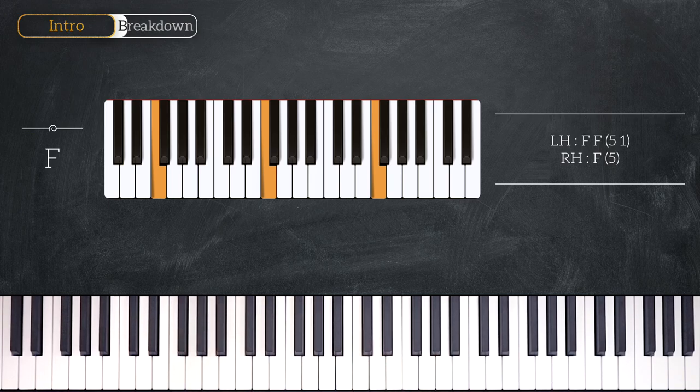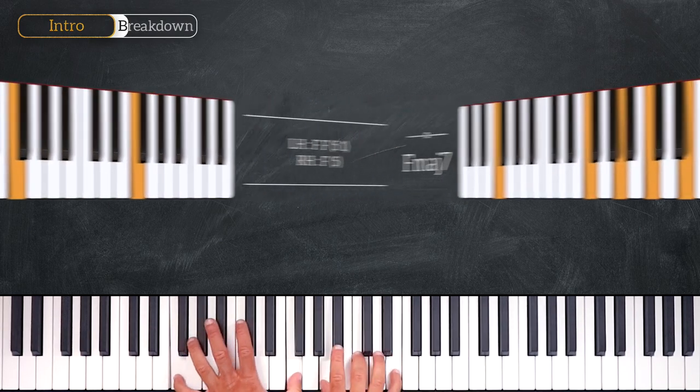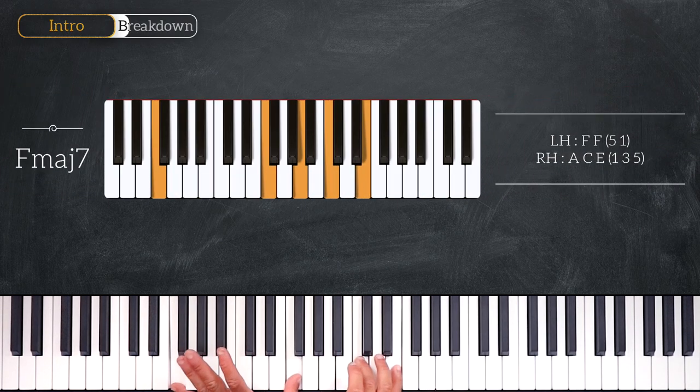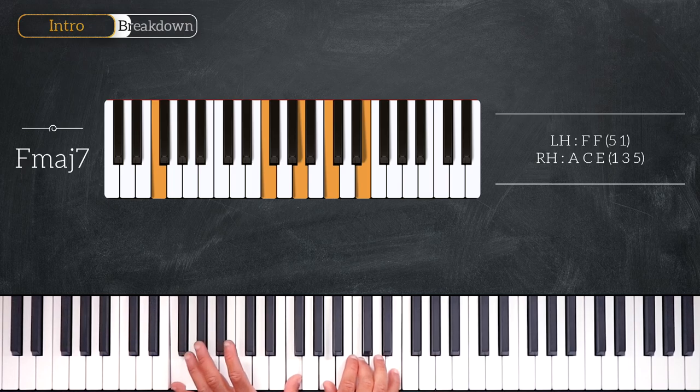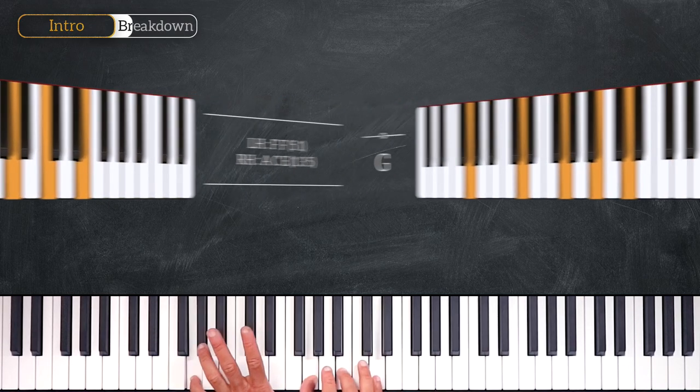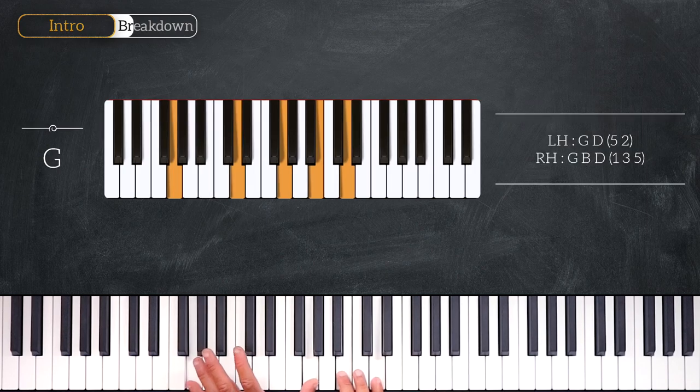Then from here we are going to play this F major 7: octave F on the left, A, C, E on the right. Then we'll play this G chord, playing octave G on the left and B, D on the right.